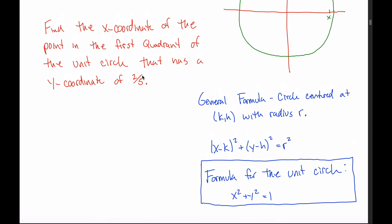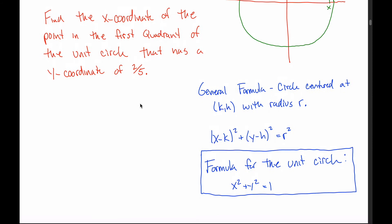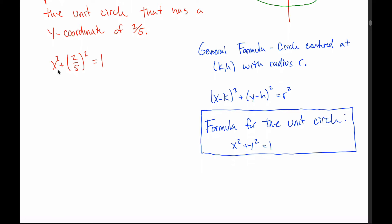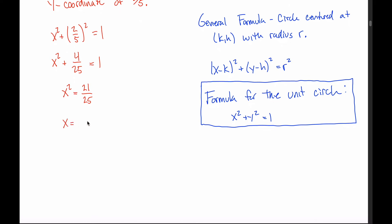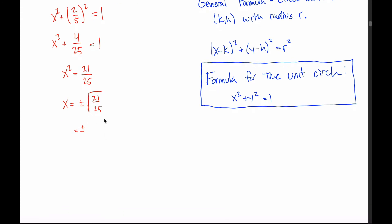With this formula I can easily answer questions like: given y-coordinate of 2 fifths, find the x-coordinate. I write x² + (2/5)² = 1. That's an equation with only one unknown. 2 fifths squared is 4/25, so subtracting 4/25 from both sides, thinking of 1 as 25/25, I get x² = 21/25. Taking the square root of both sides gives x = ± √(21/25), which simplifies to ± √21 / 5.